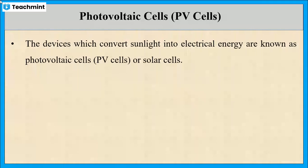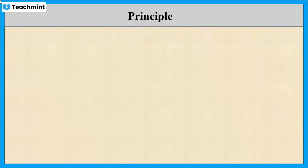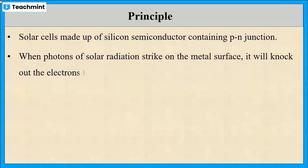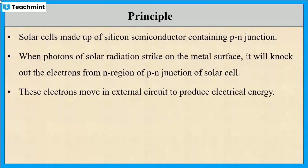First let us see the principle of photovoltaic cells. Solar cells are made up of silicon semiconductors. As you know, solar radiation contains energy packets which are called photons. These photons when striking on the n-region of p-n junction will knock out the electrons. These electrons move in the external circuit and then produce electrical energy. This is the main principle of solar cells.